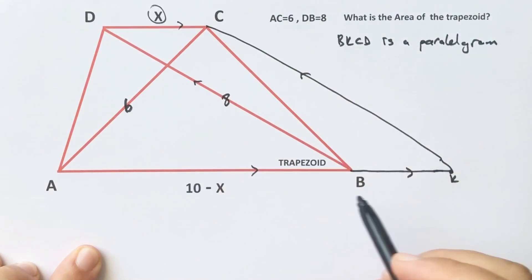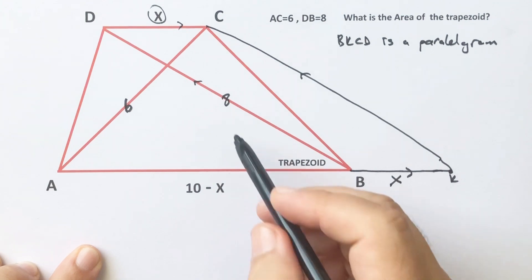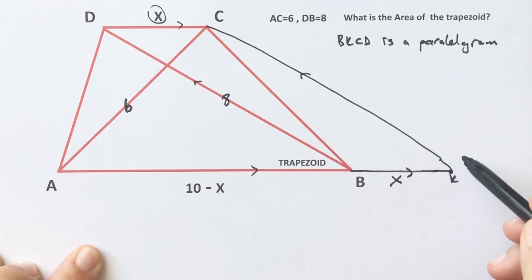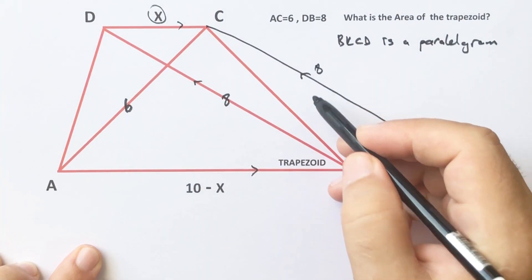If here is x, this length must be x units, and if it is 8, this length must be 8 units.